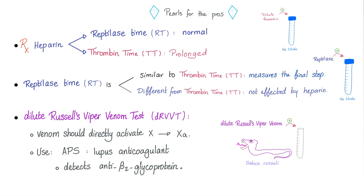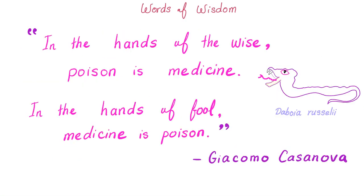The Dilute Russell Viper Venom Test (DRVVT): get the patient's serum and add dilute Russell Viper Venom — the venom activates factor 10 into factor 10a. We use this for antiphospholipid antibody syndrome (lupus anticoagulant), because it detects the anti-beta-2 glycoprotein 1 antibody prevalent in antiphospholipid antibody syndrome. In the hands of the wise, poison is medicine.